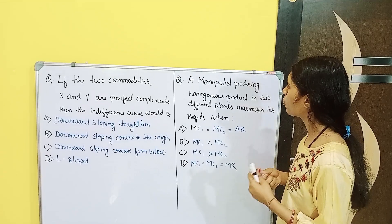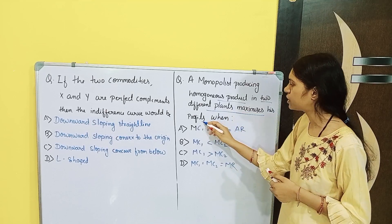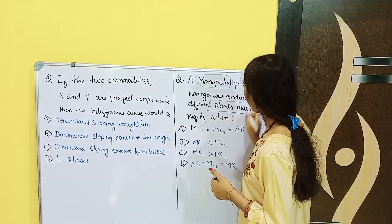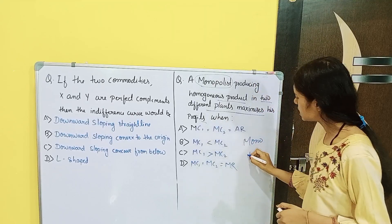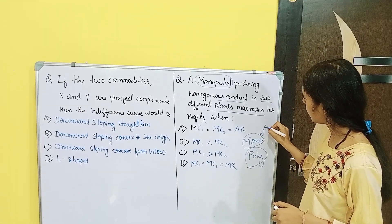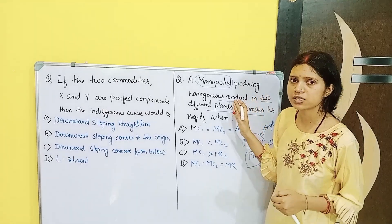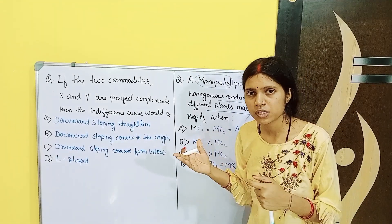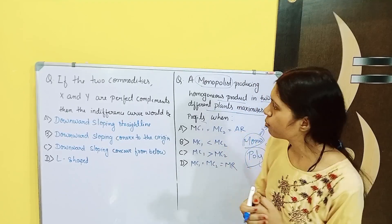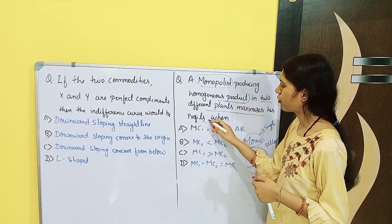Our question is: a Monopoly is producing homogenous products in two different plants and maximizes his profit. Monopoly stands for single — 'mono' means single, 'poly' means many. In the Monopoly market, the monopolist produces homogenous products. What will happen when operating two different plants and maximizing profit?